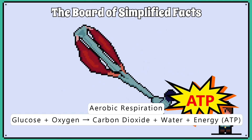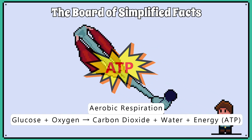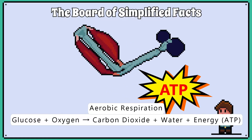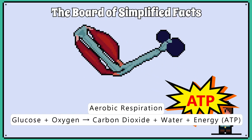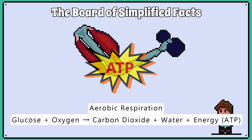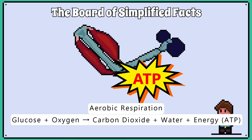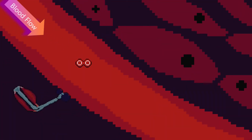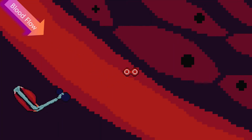Muscles need energy. That energy comes normally from ATP that is made during aerobic respiration. Remember that cells need a constant supply of oxygen from the blood to complete aerobic respiration.